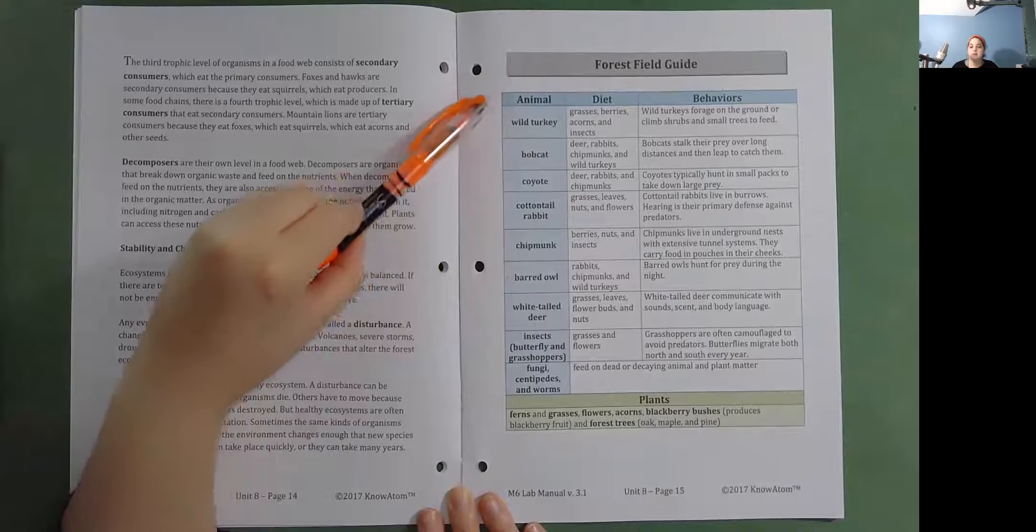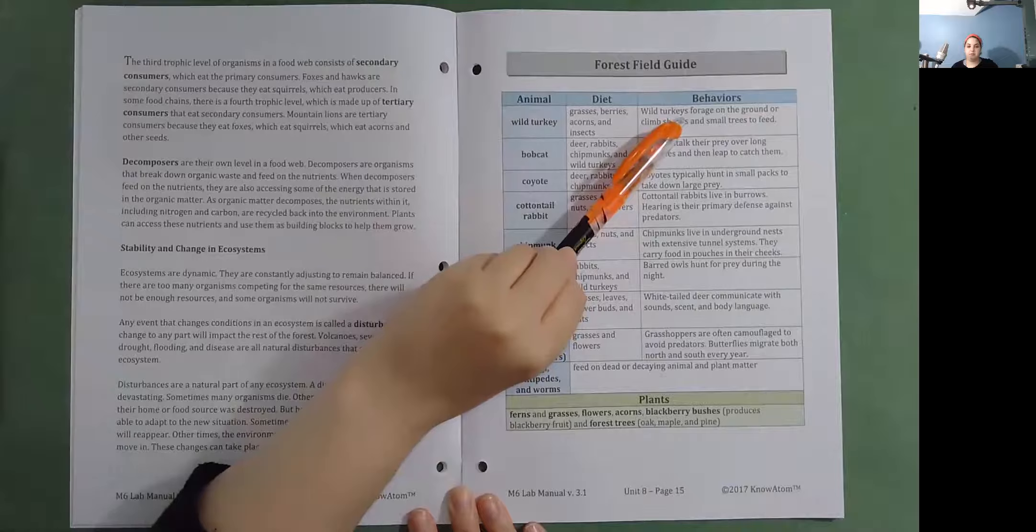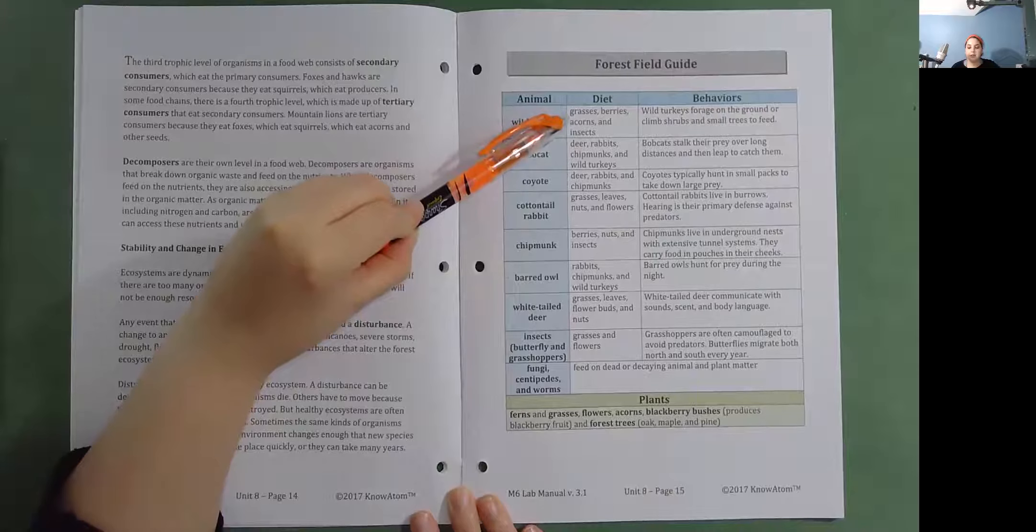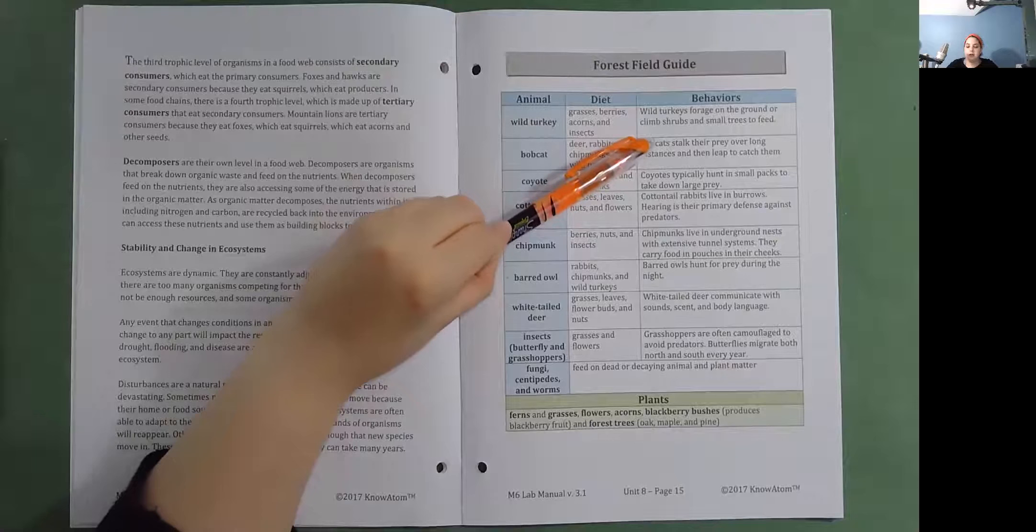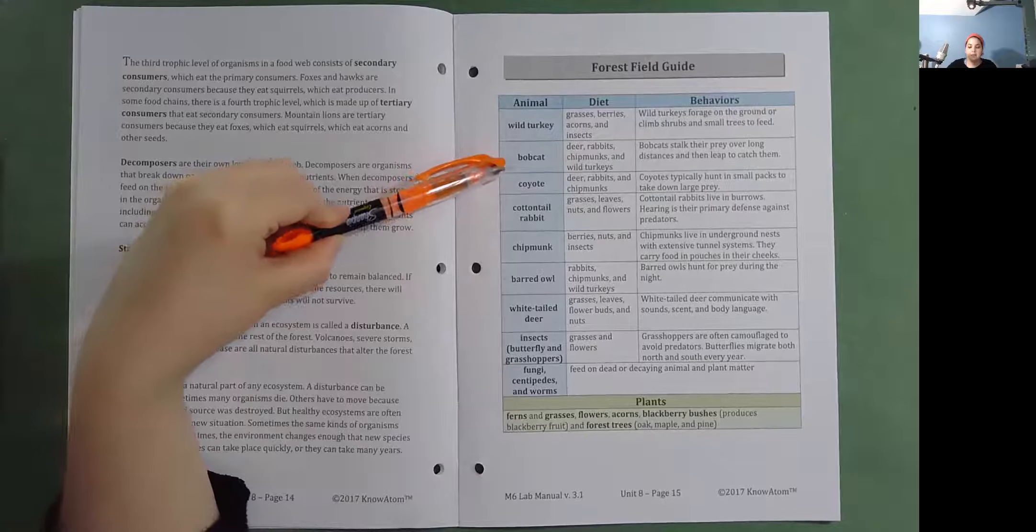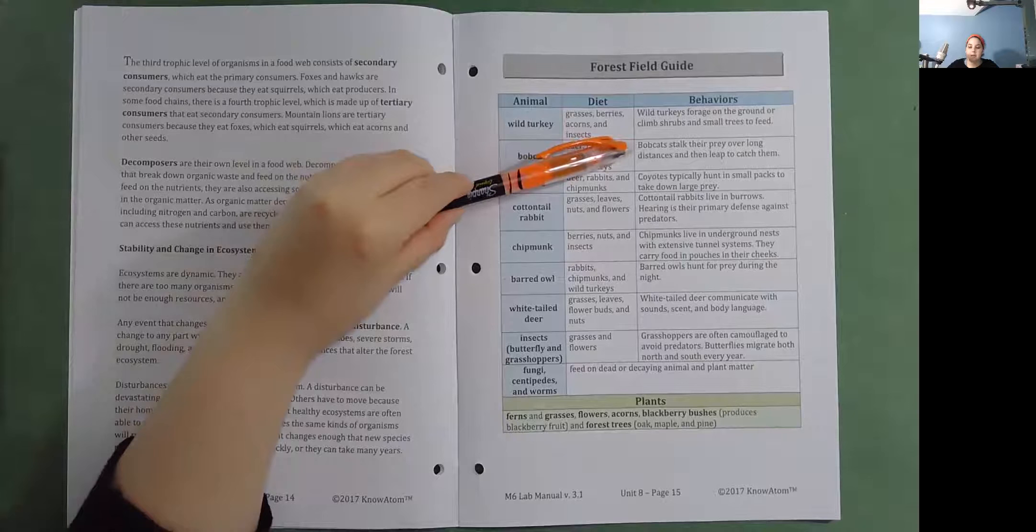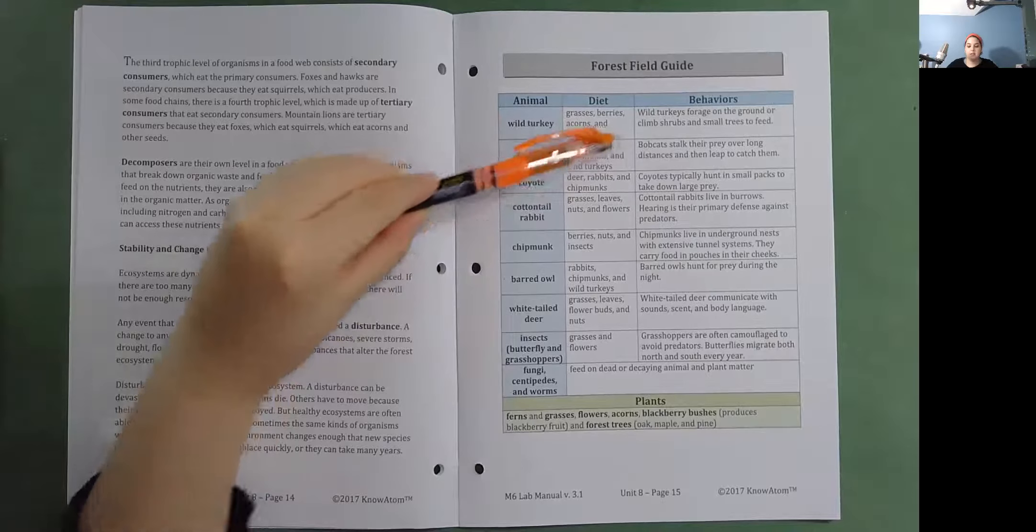Forest field guide. The animal, the diet, and the behaviors. Wild turkey. Eat grasses, berries, acorns, and insects. Wild turkeys forage on the ground or climb shrubs and small trees to feed. Bobcat. Bobcat eats deer, rabbits, chipmunks, and wild turkeys. Bobcats stalk their prey over long distances and then leap to catch them.